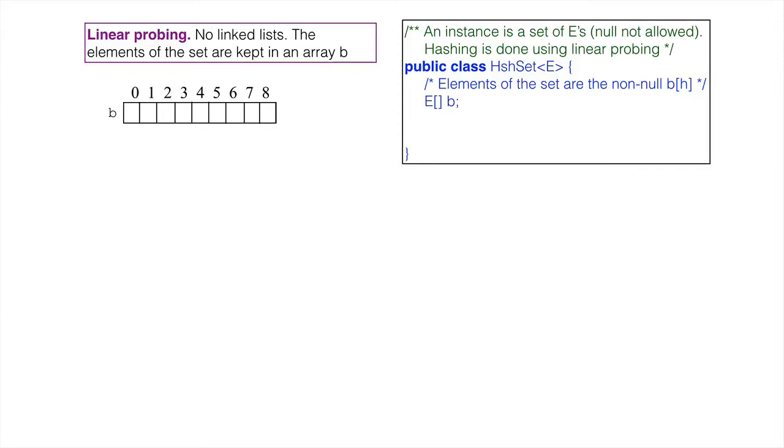The main advantage of hashing with linear probing instead of linked lists is a large reduction in space requirements. There are no linked lists. Instead, the elements of the set are kept directly in an array B. We show the array for an empty set. Empty array elements are assumed to contain null.